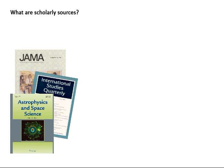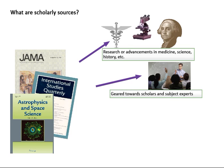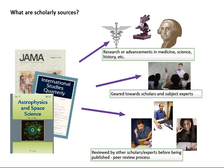Scholarly literature is published in subject-specific journals. The articles in scholarly journals cover research on new theories or advancements in subject areas such as medicine, science, and history. These articles are geared towards scholars and experts on that particular subject and are reviewed by other scholars in the field before they are published. This is known as the peer review process.